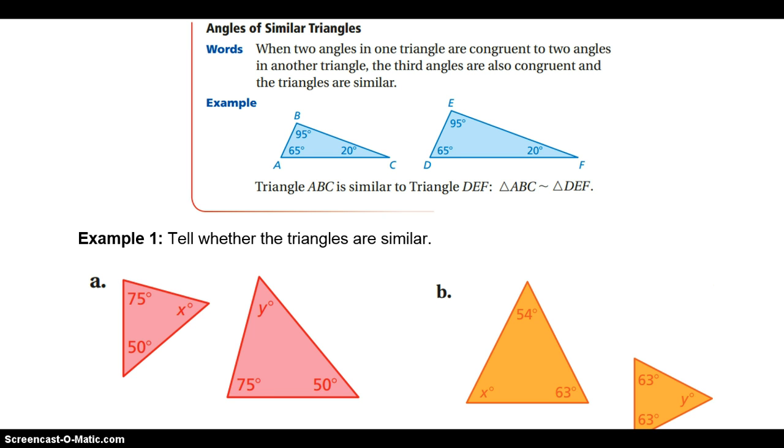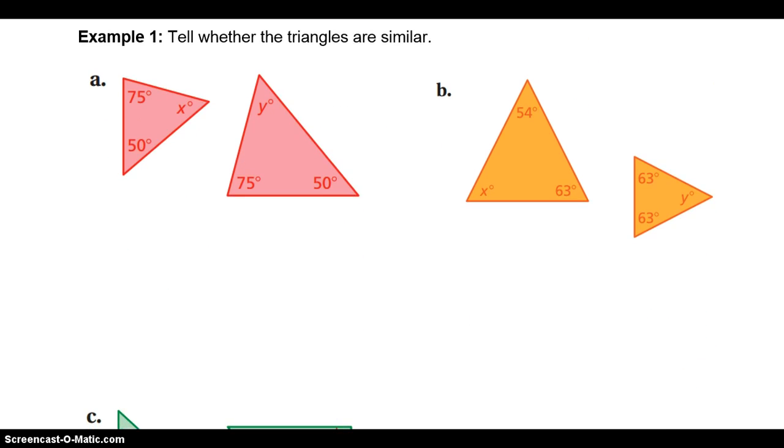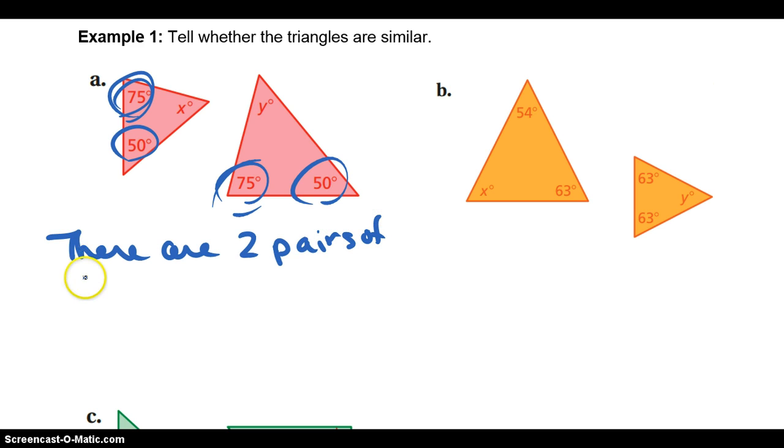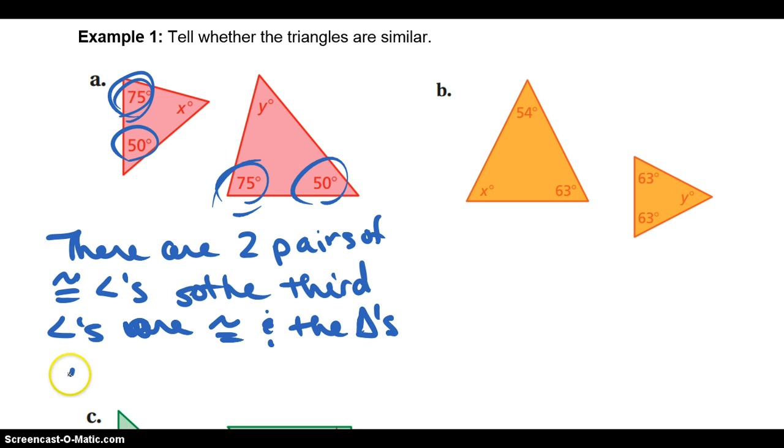On example one, tell whether the triangles are similar. Looking at the angles, you need to find two pairs of angles that are congruent to say that they're similar. So 50 and 50, there's one pair, and 75 and 75, those are the same. Therefore, there are two pairs, so the third angles are congruent, and the triangles are similar.